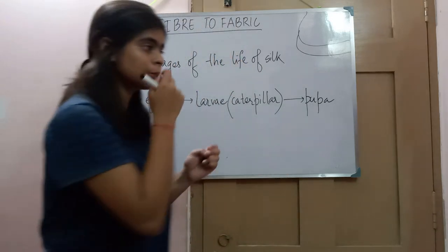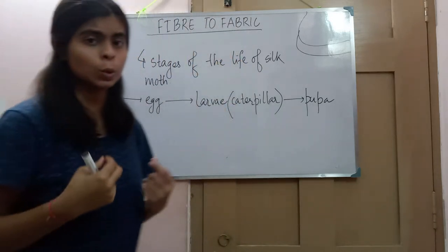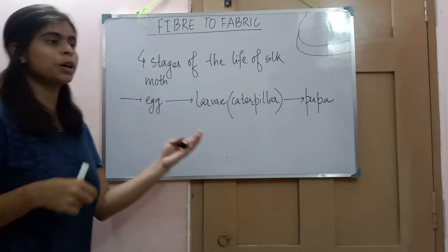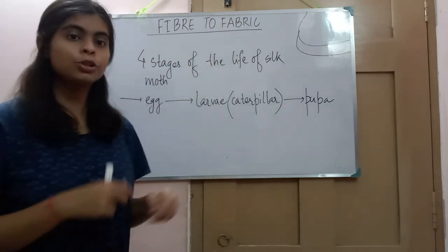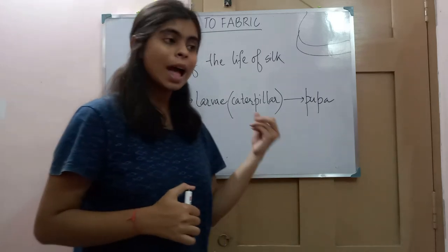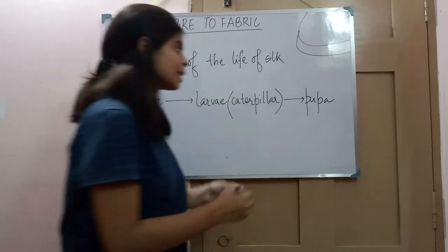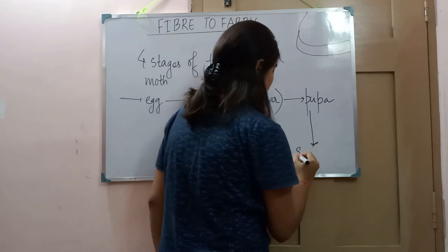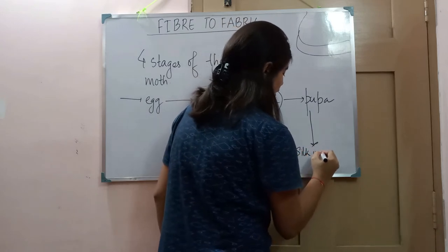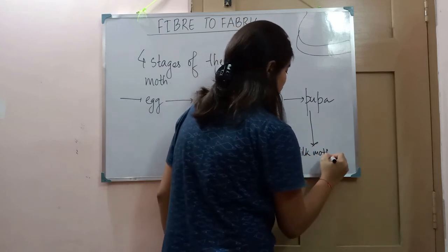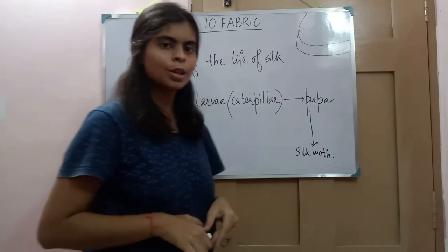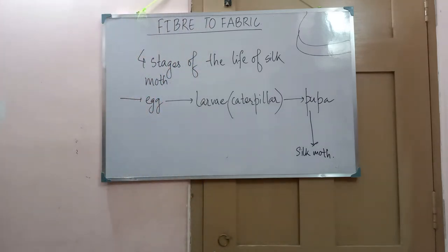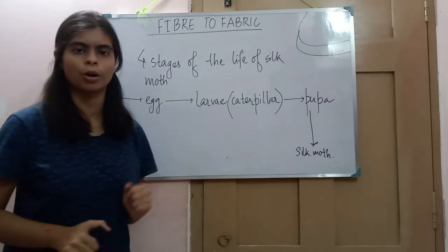The pupa stage is a hibernation stage in which they build a cocoon. Inside the cocoon, the pupa stays and develops into a silk moth. The last stage is the silk moth. So development and growth of the pupa occurs inside the cocoon. These are the four stages of the life of the silk moth that we discussed in the last class.